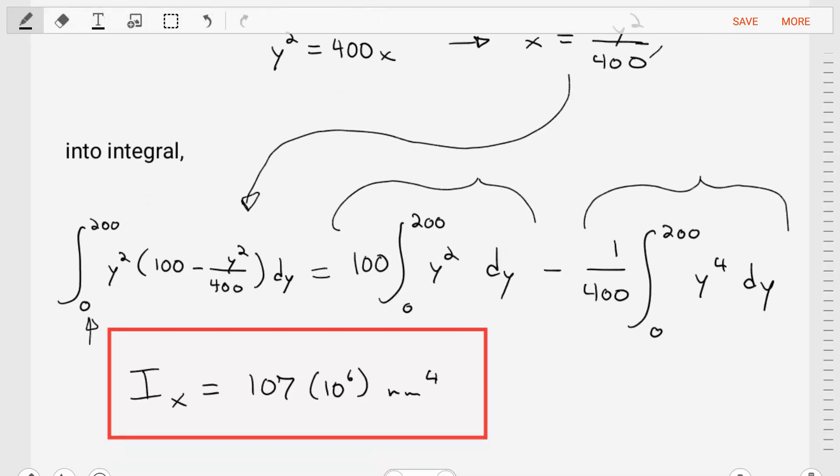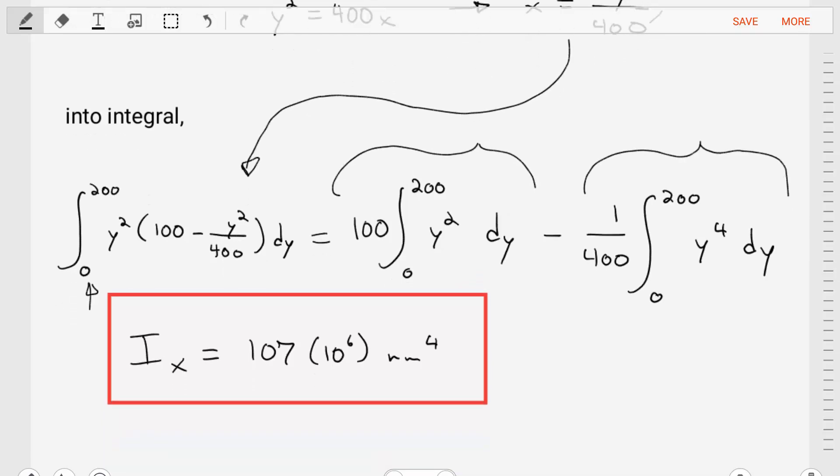When we plug this in our calculators and solve for this integral, we'll find that the area moment of inertia about the x-axis is equal to 107 times 10 to the 6 meters to the power 4.